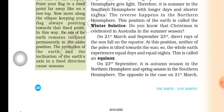On 21st March and September 23rd, direct rays of the sun fall on the equator. At this position, neither of the poles is tilted towards the sun, so the whole earth experiences equal days and equal nights. This is called an equinox.